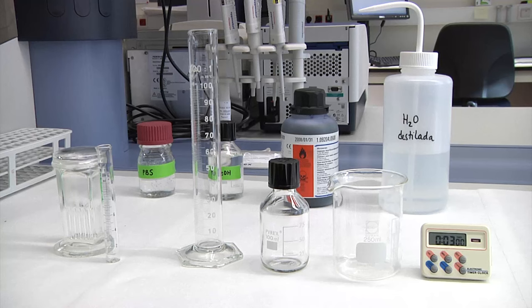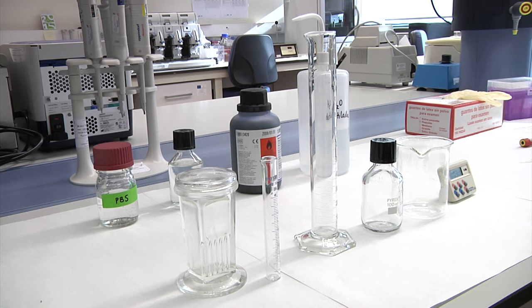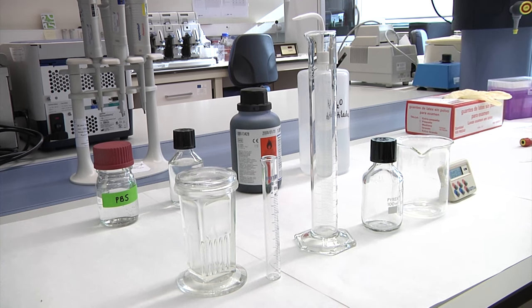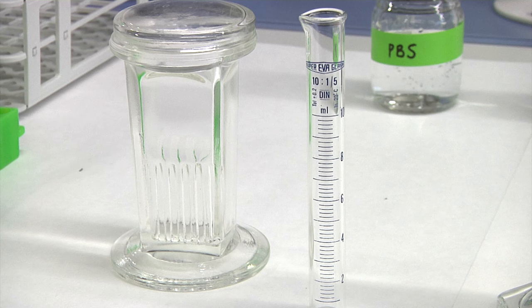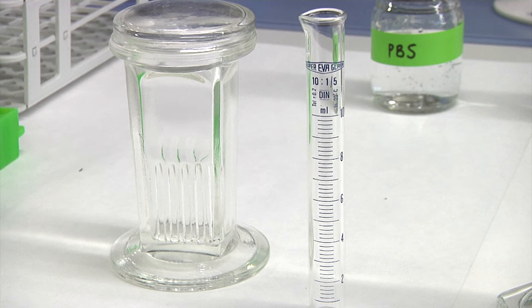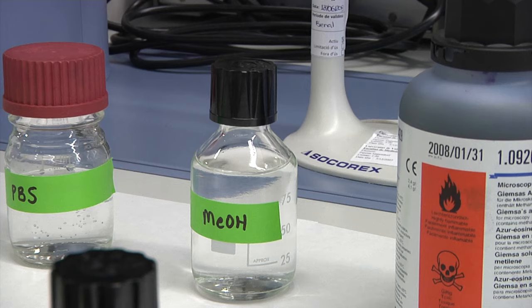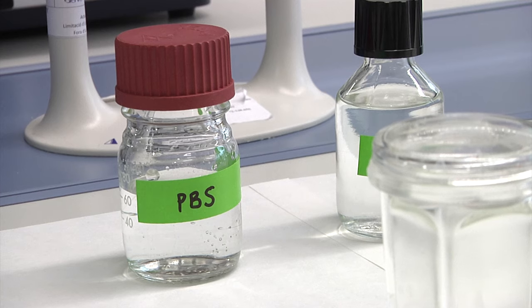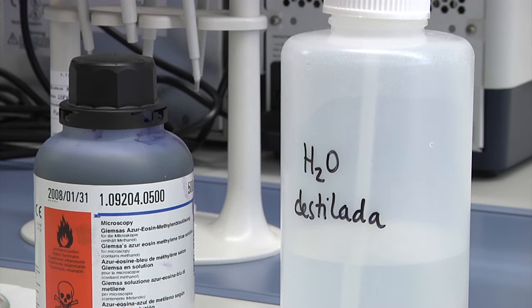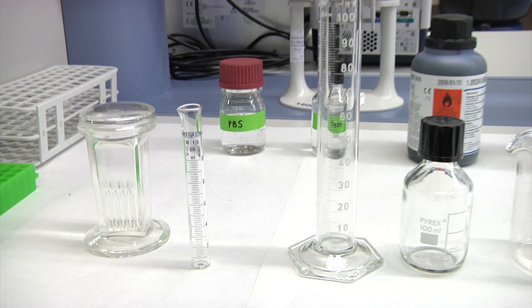Although there are different variations of the Giemsa stain, in this video we show you a very fast and simple protocol to perform it. We will need a bucket or crystallizer, methanol, Giemsa dye, PBS buffer, distilled water, and graduated cylinders.